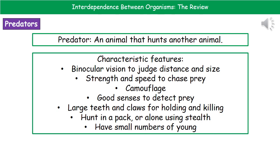First of all, let's consider predators as a group. When we're talking about a predator, we're referring to an animal that hunts another animal. You'd be amazed at how many times I've been told in exam answers that the predator is a rabbit. A rabbit doesn't have to hunt the grass — it's not like as the rabbit approaches, the grass uproots and runs off down the road. A predator has to be hunting another animal.